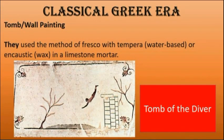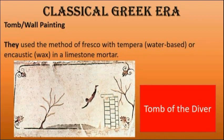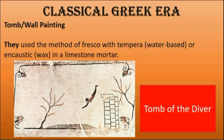Dito din sa classical Greek era, meron tayong tomb wall or wall painting. They use the method of fresco with tempera or water base and encaustic in a limestone mortar. Isang halimbawa ng wall painting ay ang Tomb of the Diver. Bihira na lang ang mga natagpuan na halimbawa ng mga painting na ito since ang mga ilan ay gumamit ng water-based pigment na hindi naman masyadong nagtatagal, unlike yung mga inuukit sa mga kuweba. Nasisira din ito sa pagdaan ng panahon, at ang mga ilan ay gumamit ng panel of wood na wala namang magtatagal ng hundreds of years.